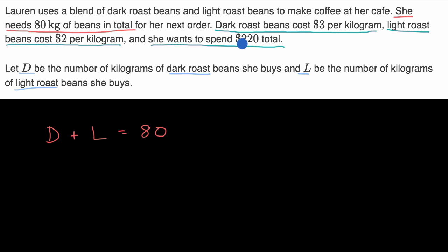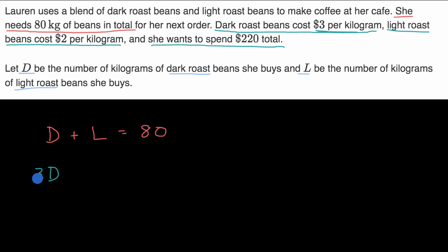The way to think about it is we just have to have an expression for how much she spends on dark roast beans and how much she spends on light roast beans. Then we add those two together and that needs to be equal to $220, because that's how much she wants to spend in total. So how much does she spend on dark roast beans? It's going to be the number of kilograms of dark roast beans that she buys, and it costs $3 per kilogram, so we multiply by 3. This is how much she spends on dark roast beans.